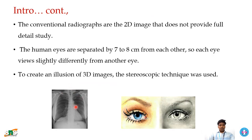The conventional 2D image does not provide full detail for study. Also, the human eyes are separated by a distance of seven to eight centimeters, so each eye views slightly differently from the other. To create an illusion of a 3D image, the stereoscopic technique is used.